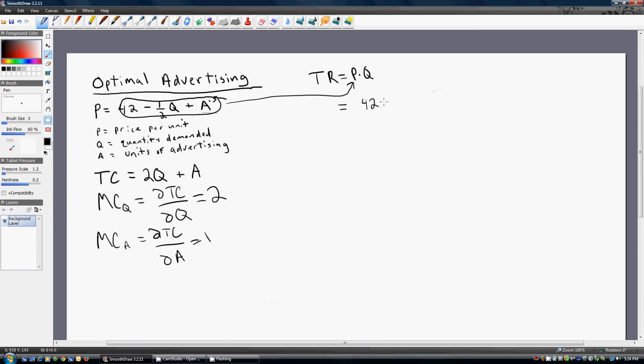So 42 minus 1⁄2 Q plus the square root of advertising, that's the P part, and that's all multiplied by Q. I'm going to simplify this.